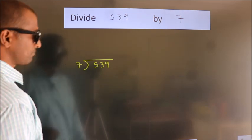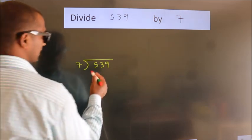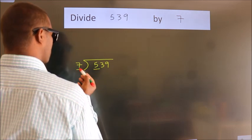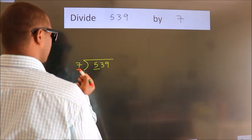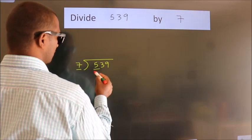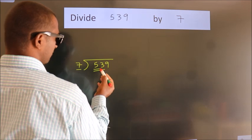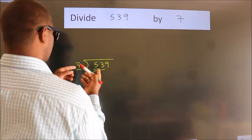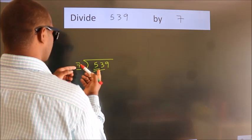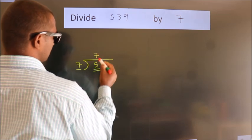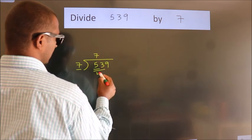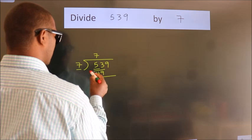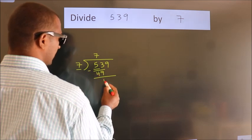Next, here we have 5, here 7. 5 is smaller than 7, so we should take two numbers: 53. A number close to 53 in the 7 times table is 7 sevens, 49. Now we should subtract. We get 4.